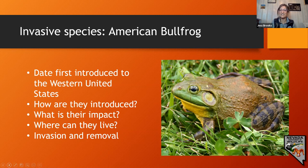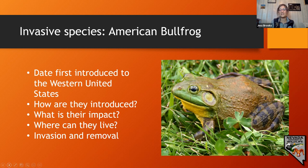Bullfrogs compete with and prey on native species and can out-compete native species very easily. The American bullfrog can be very aggressive and is able to out-compete native frog and toad species within a single generation.